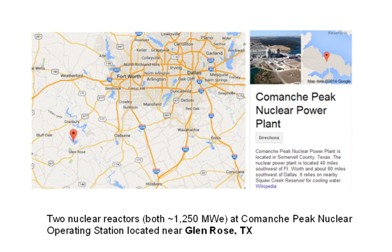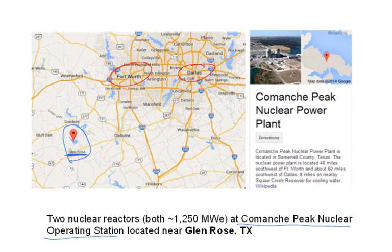If you're from the Dallas-Fort Worth area, they have two reactors at the Comanche Peak Nuclear Operating Station near Glen Rose, Texas — 1,250 megawatts electric each. TXU is the utility that owns it, providing power to the Dallas-Fort Worth area.